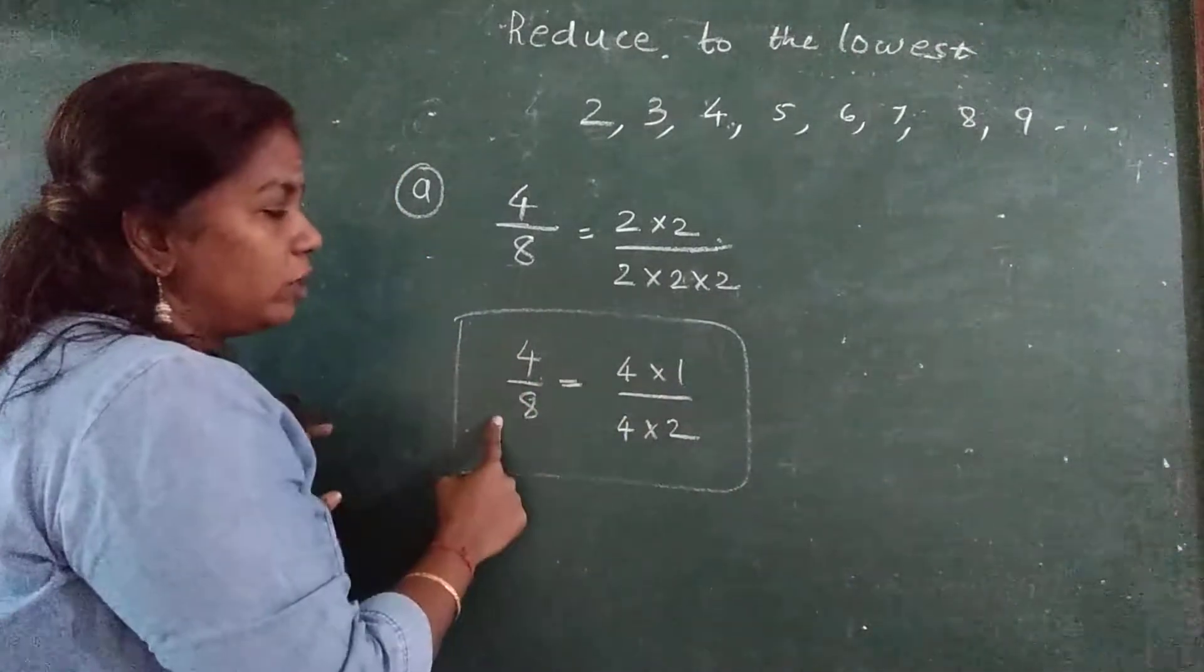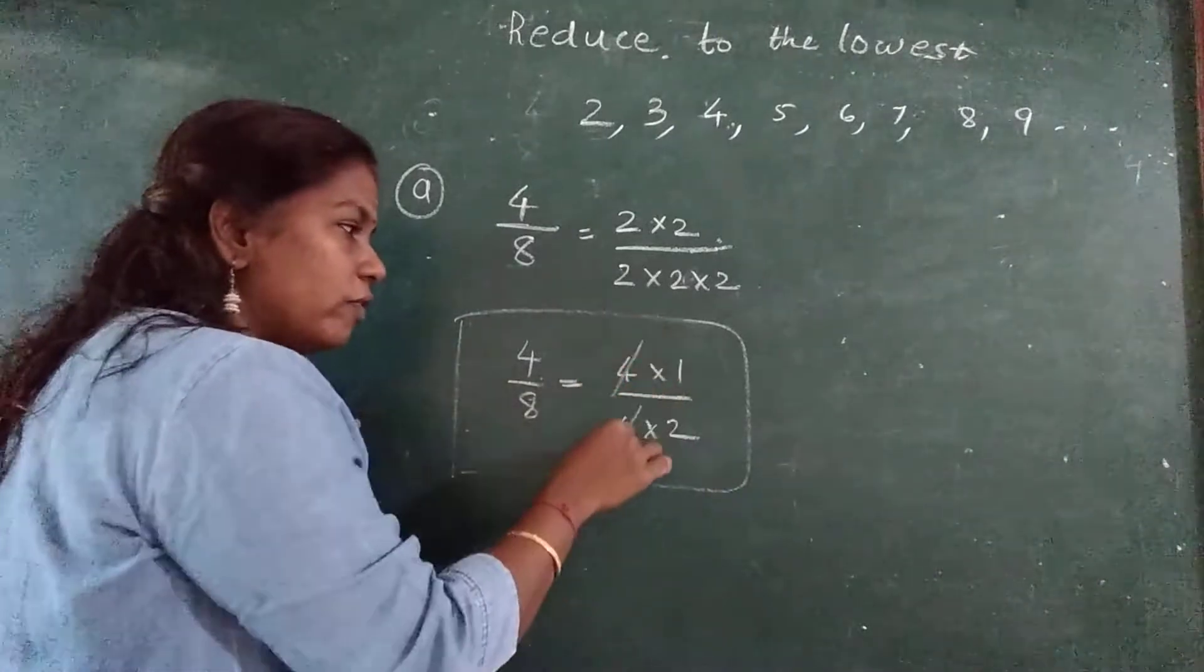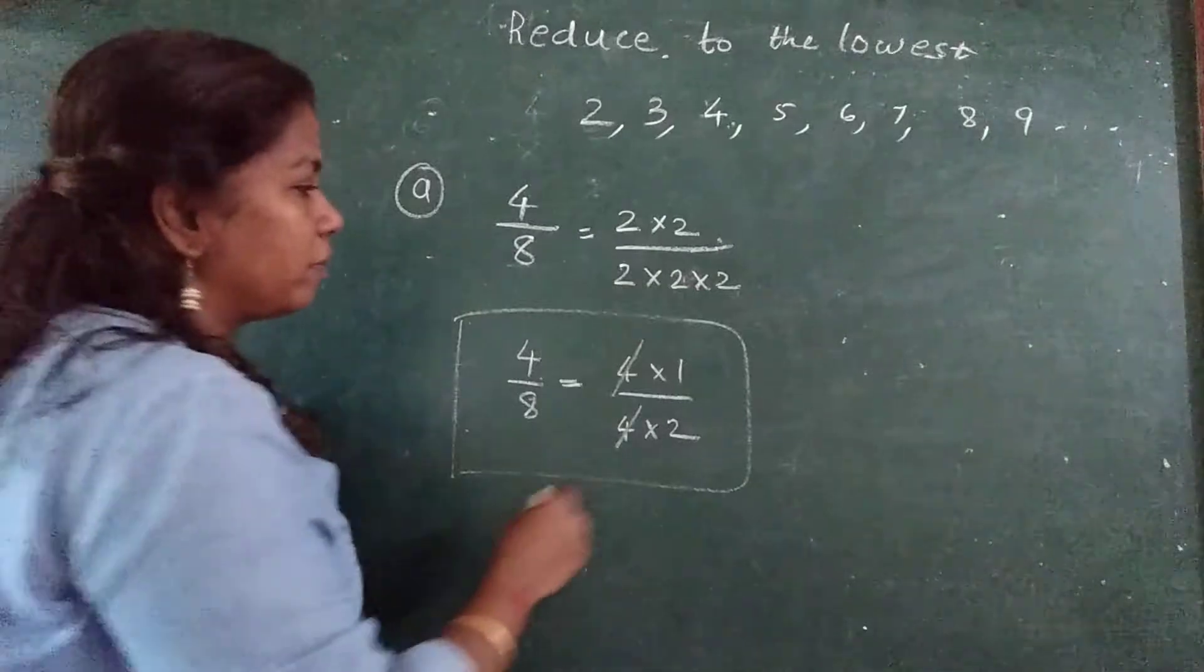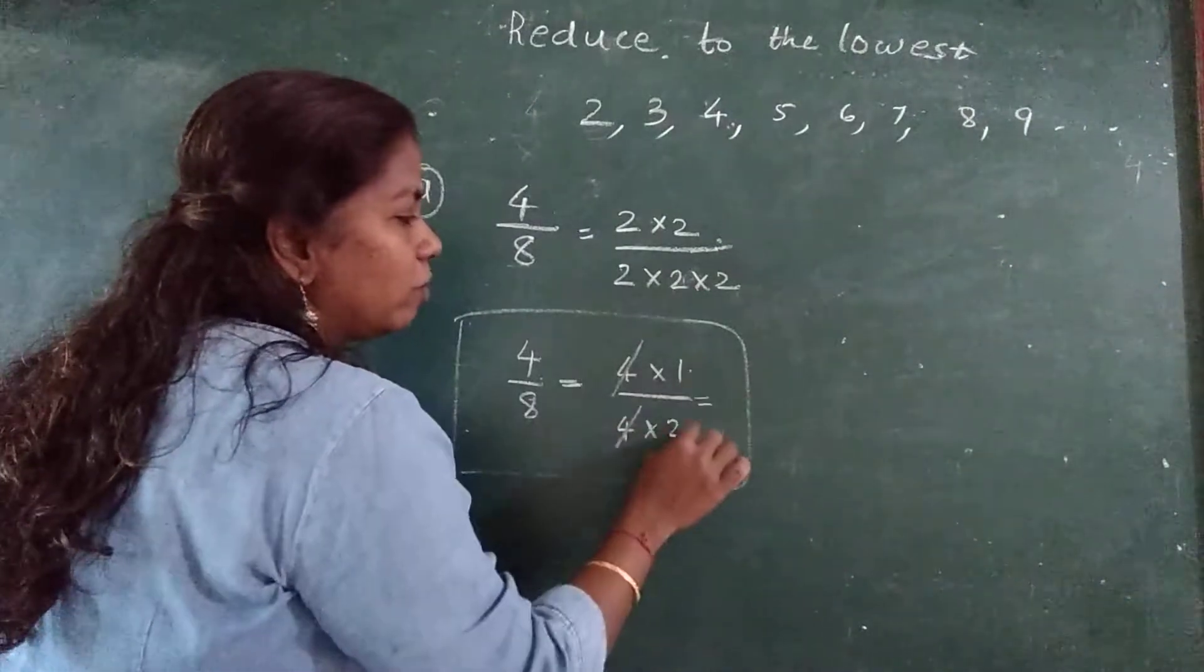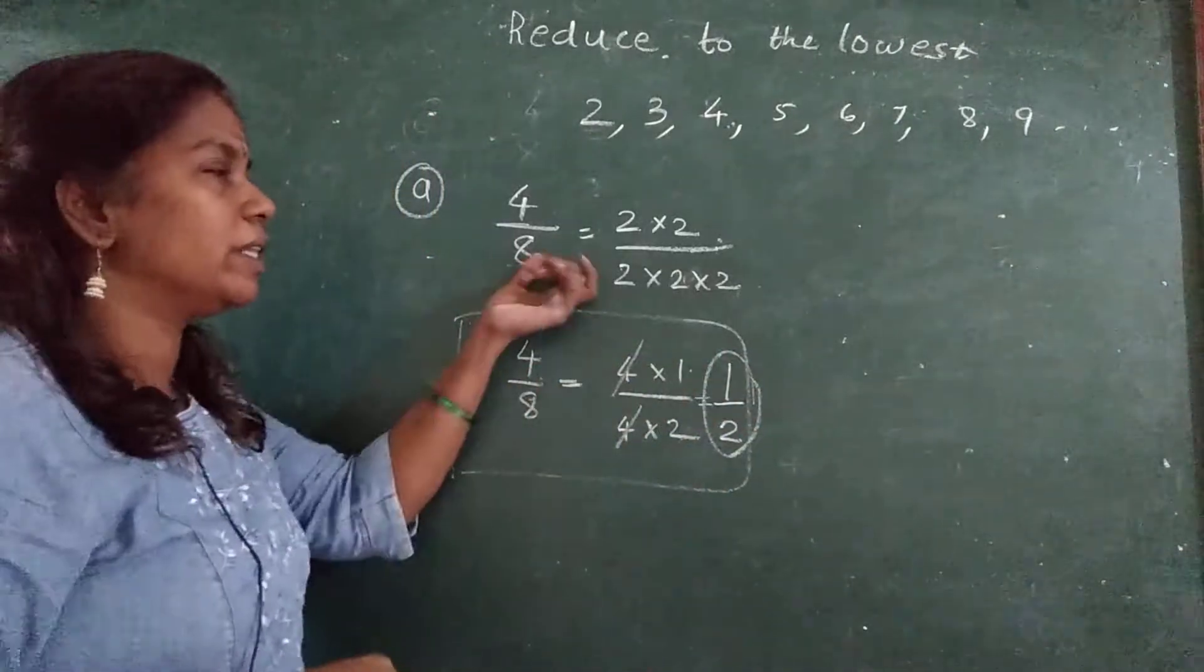How I have split it? 4 upon 8, 4 into 1, 4 into 2. This 4, 4 I will cancel. Same same number I am canceling. Then what is remaining? 1 upon 2. Got the answer?